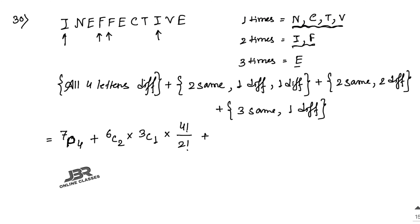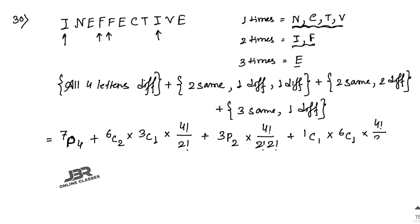Case 3: Two same letters and two different letters (another sub-case). That gives 3P2 selections, multiplied by 4!/(2! × 2!). Case 4 (last): Three same letters (E appears 3 times) and one different letter. That is 1C1 for the E group, and 6C1 for the other letter, with arrangement 4!/3!.